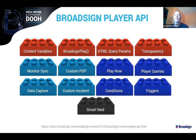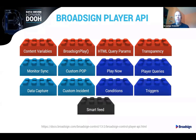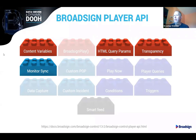Features can be loosely grouped into those that allow data injection to the content, data transmission both to and from the player, and those that enable loop or playlist manipulation in the order in which content plays. The full in-depth documentation for the player API is available at broadsign.com. For the case study project we're going to go over now, the four features I'm going to focus on are content variables, MonitorSync, query params, and transparency.